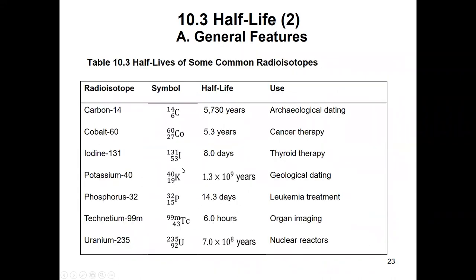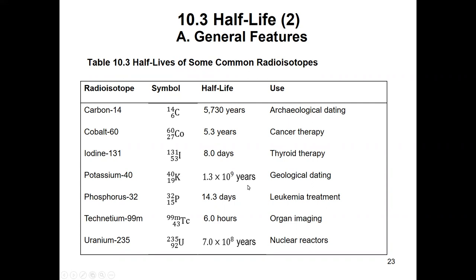Here are the half-lives of some common radioisotopes. Carbon-14, which is used for archaeological dating, has a half-life of 5,730 years — quite long. Cobalt-60, used in cancer therapy, has a half-life of 5.3 years. Iodine-131, used in thyroid cancer treatment, has a half-life of 8 days. Potassium-40, used in geological dating, has a half-life of 1.3 × 10⁹ years, so much longer than carbon-14, which helps date older things.